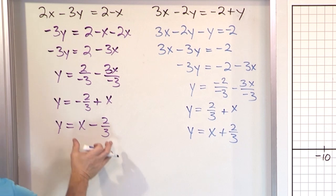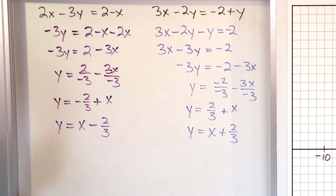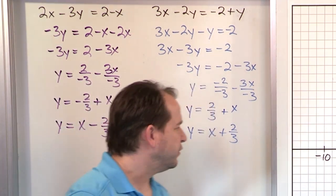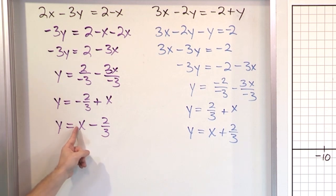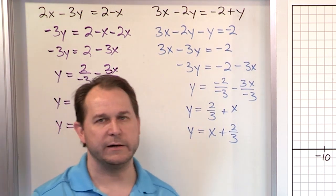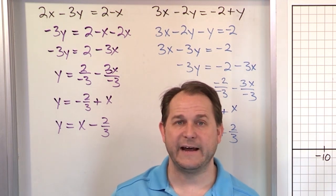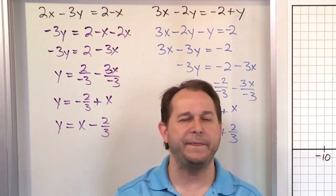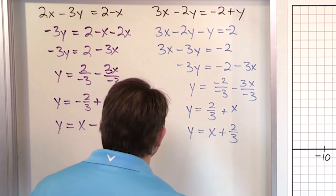Now they are very similar, but x minus 2 thirds is not the same as x plus 2 thirds. They are different. But what do you notice? The slopes are the same. The y-intercepts are different, true. But take a look at the slope - the slope here is 1, and the slope here is also 1. So that means, if the two slopes of two lines are the same, then they're parallel and they never intersect, no matter what the rest of the equation looks like. So let's take a look just to verify that for ourselves.